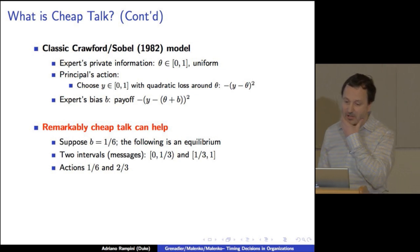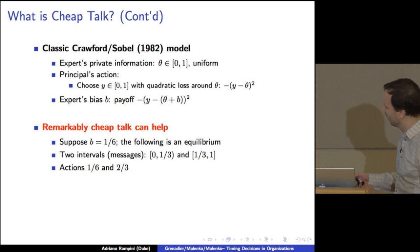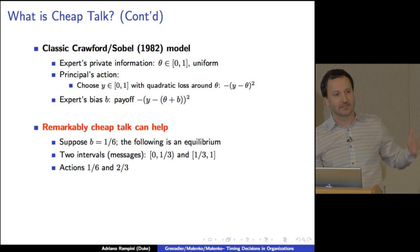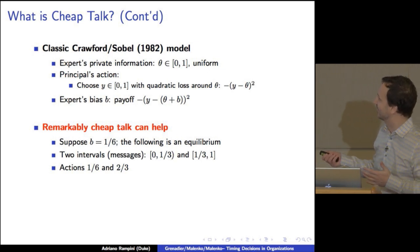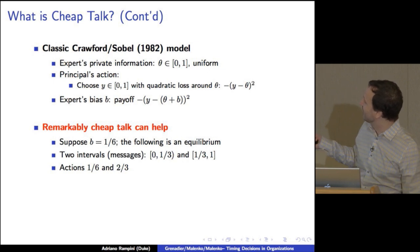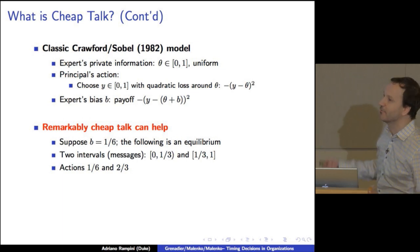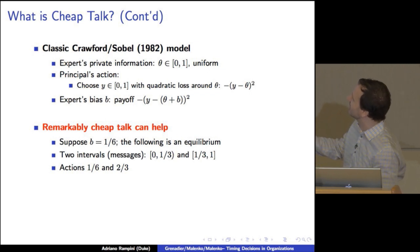All right. More interestingly and remarkably, cheap talk can help. For example, suppose the bias of the agent is one-sixth, then the following is an equilibrium. There's only two messages. Tell me whether theta is below one-third or above one-third. How does that work? So there's essentially only two things you can say. If it's below one-third, what will the principal do? Well, then he knows it's below one-third if that's an equilibrium conjecture. So he's going to pick one-sixth, halfway in between. And if it's above one-third, the principal will pick two-thirds. How is that incentive compatible? Well, think about the guy who sees one-third. He sees one-third, but he has a bias of one-sixth, so he likes one-half. Oh, look, one-half is exactly halfway between these two actions. He's indifferent, so the marginal guy is indifferent, and the other guys have a strict preference, and it works.